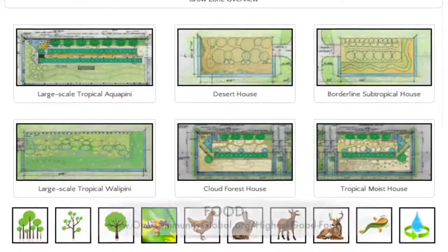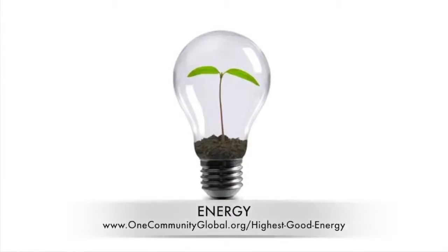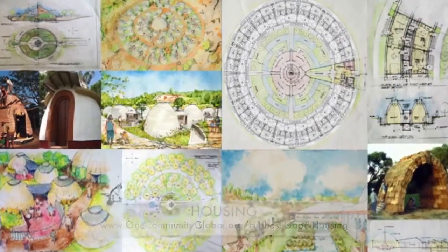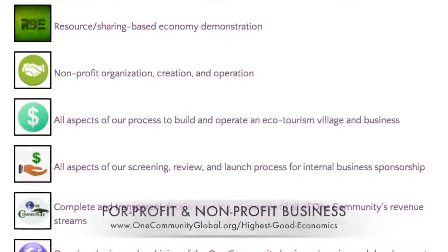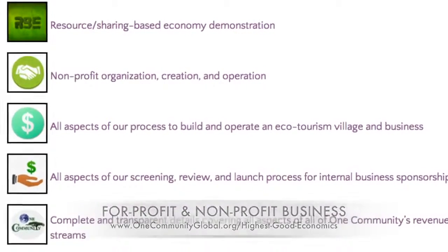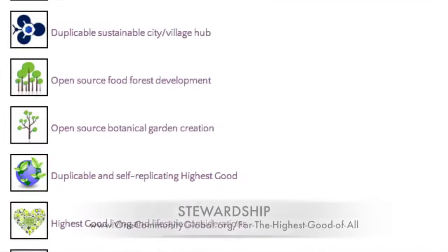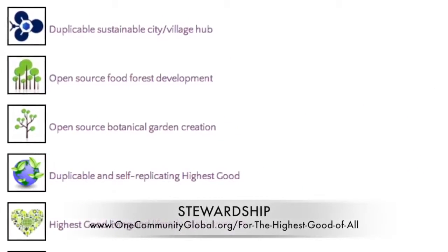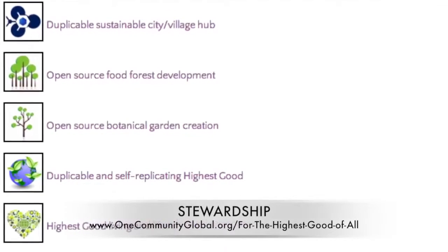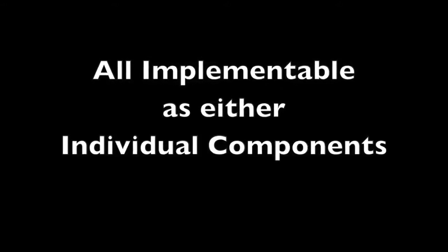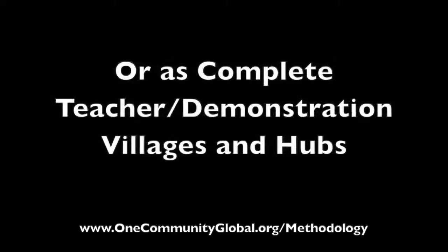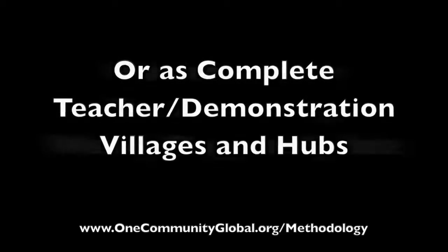This includes highest good approaches to food, energy, housing, education, for-profit and non-profit business creation, society, and true earth stewardship. We are creating all these things to be implementable as either individual components or as complete teacher demonstration villages and hubs. Welcome to the OneCommunity Weekly Progress Update.